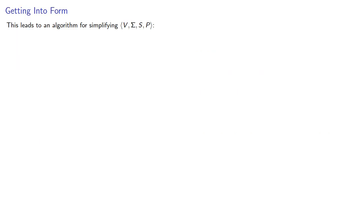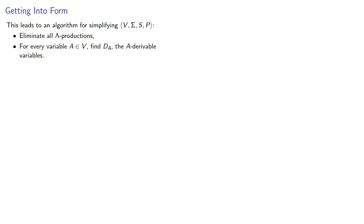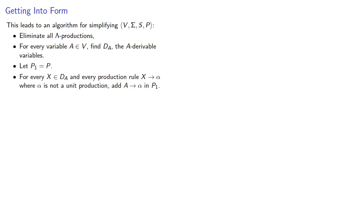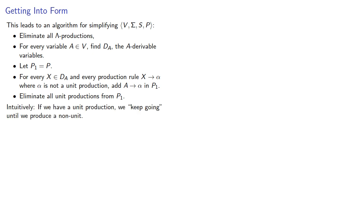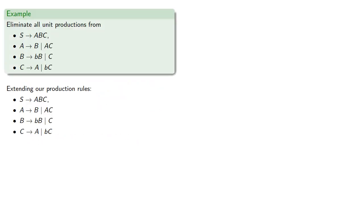This leads to an algorithm for simplifying our grammar. First we eliminate all the lambda productions. Then, for every variable, find the set of A derivable variables. Then for every A derivable variable X and every production X produces something that is not a unit production, we add the rule A produces that same something. Then we eliminate all unit production rules. Intuitively, if we have a unit production, we keep going until we have a non-unit.